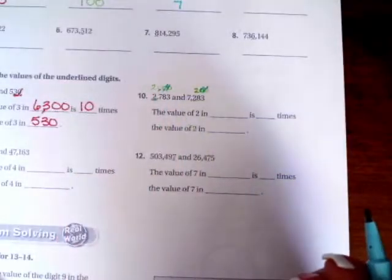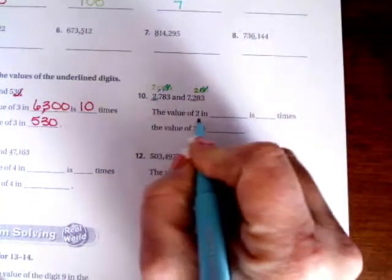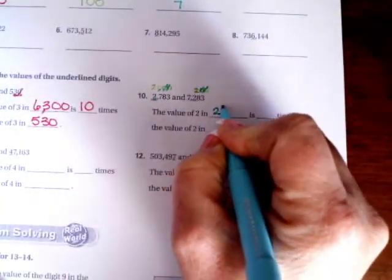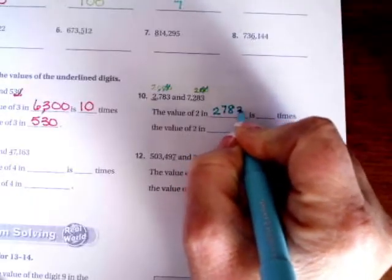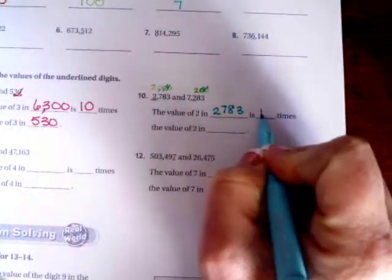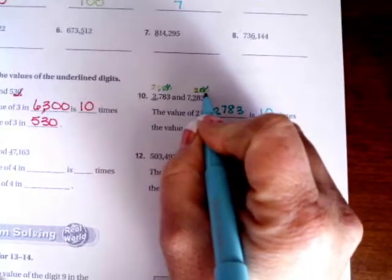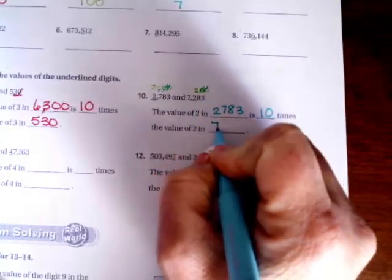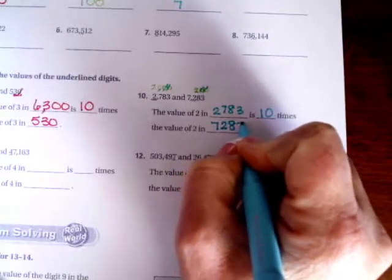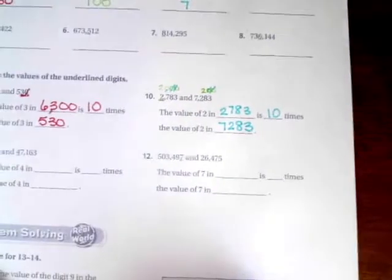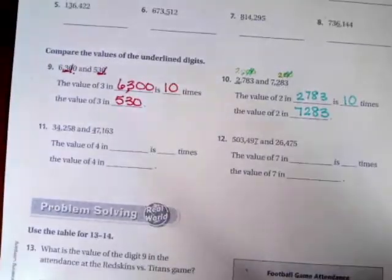I'm still left with one zero, which means the value of the two in 2,783, one zero is going to be 10 times the value of the two in 7,283. I'm going to let you guys do 11 and 12.